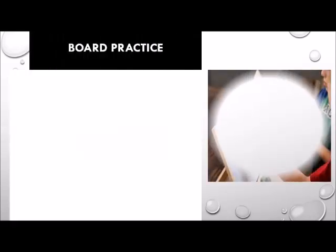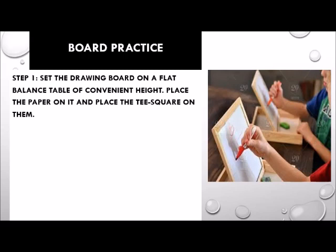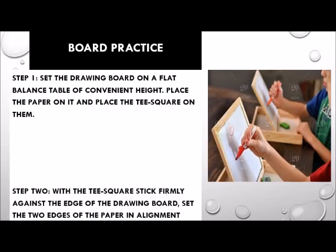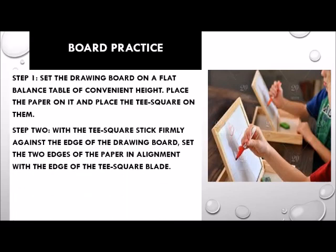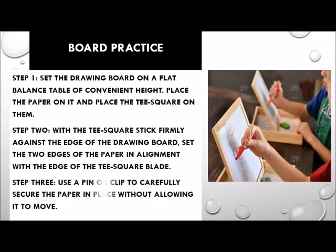Board practice. Step 1: Set the drawing board on a flat, balanced table of convenient height. Place the paper on it and place the T-square on them. Step 2: With the T-square stuck firmly against the edge of the drawing board, set the two edges of the paper in alignment with the edge of the T-square blade. Step 3: Use a pin or clip to carefully secure the paper in place without allowing it to move.